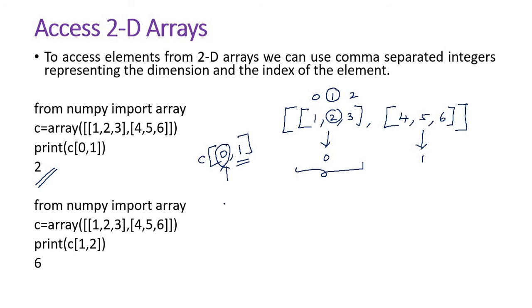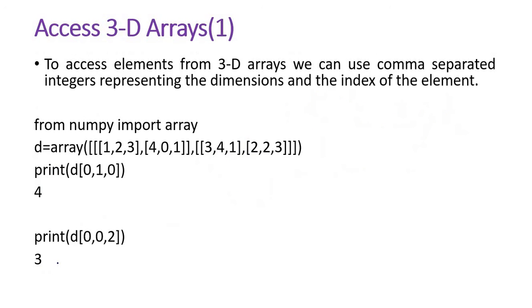For example, if it is c[1][1], that means this particular second 1D array — in that, index 1 gives us element 6. So we access 6.